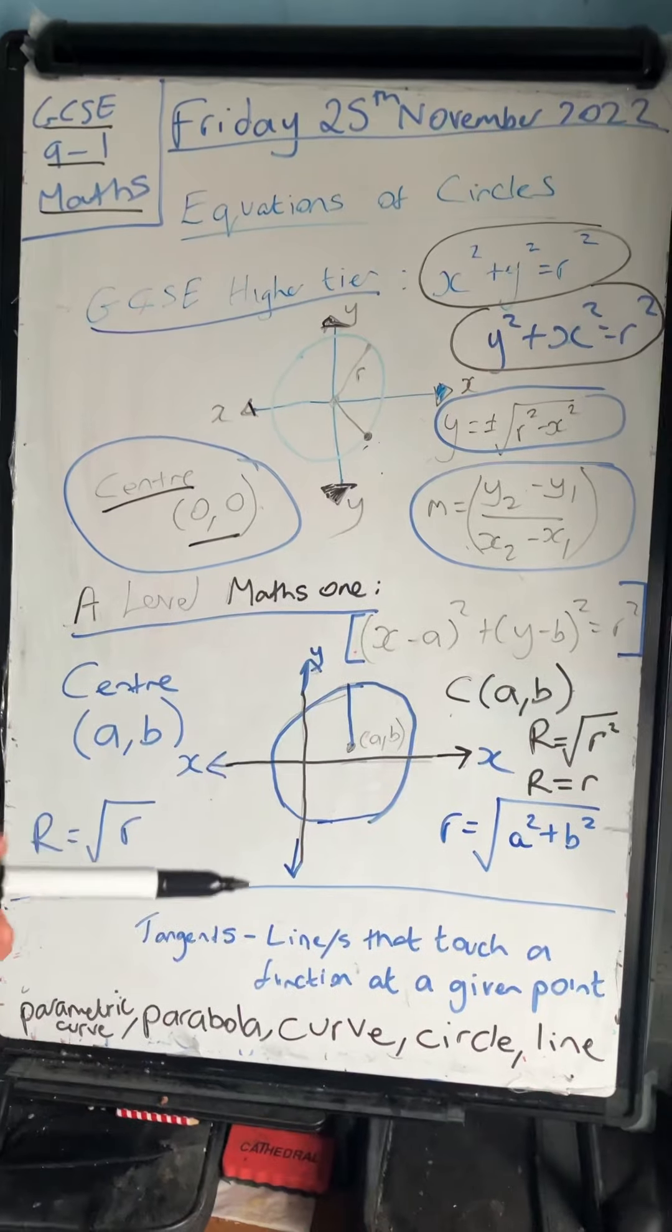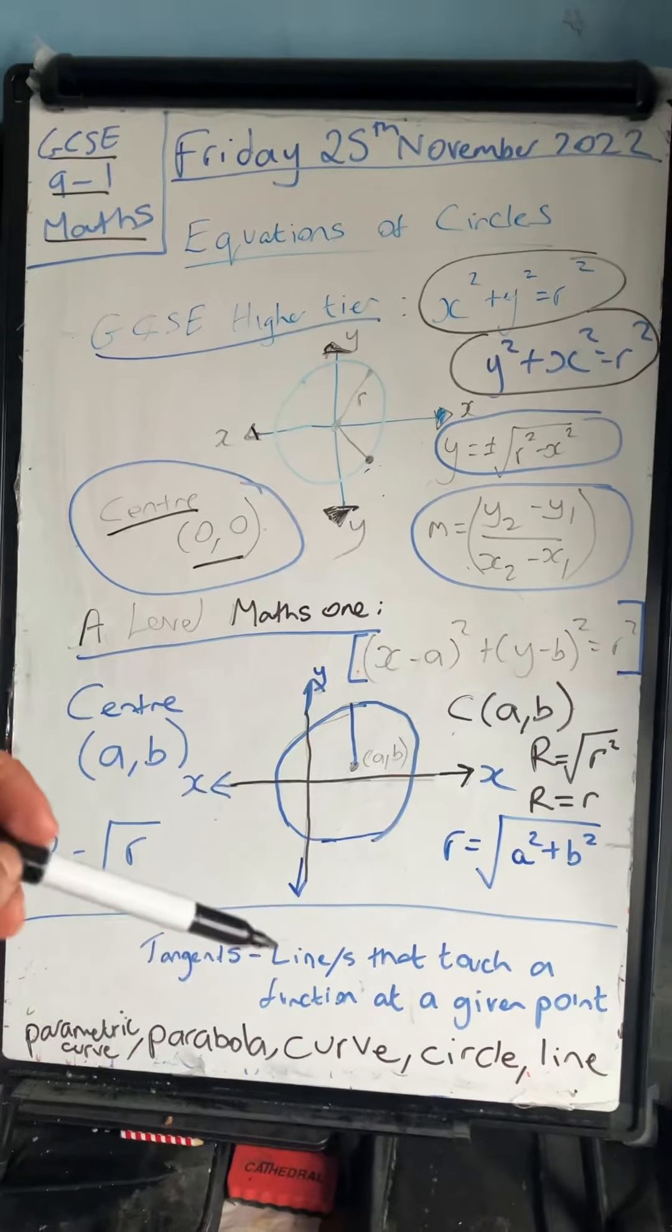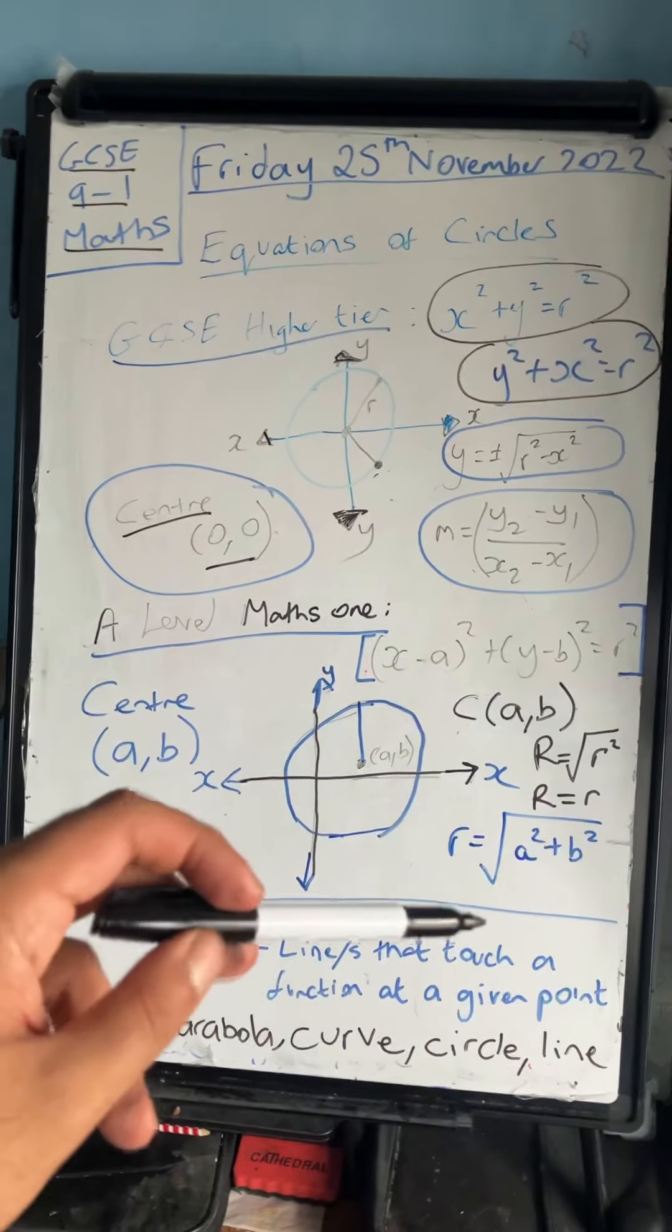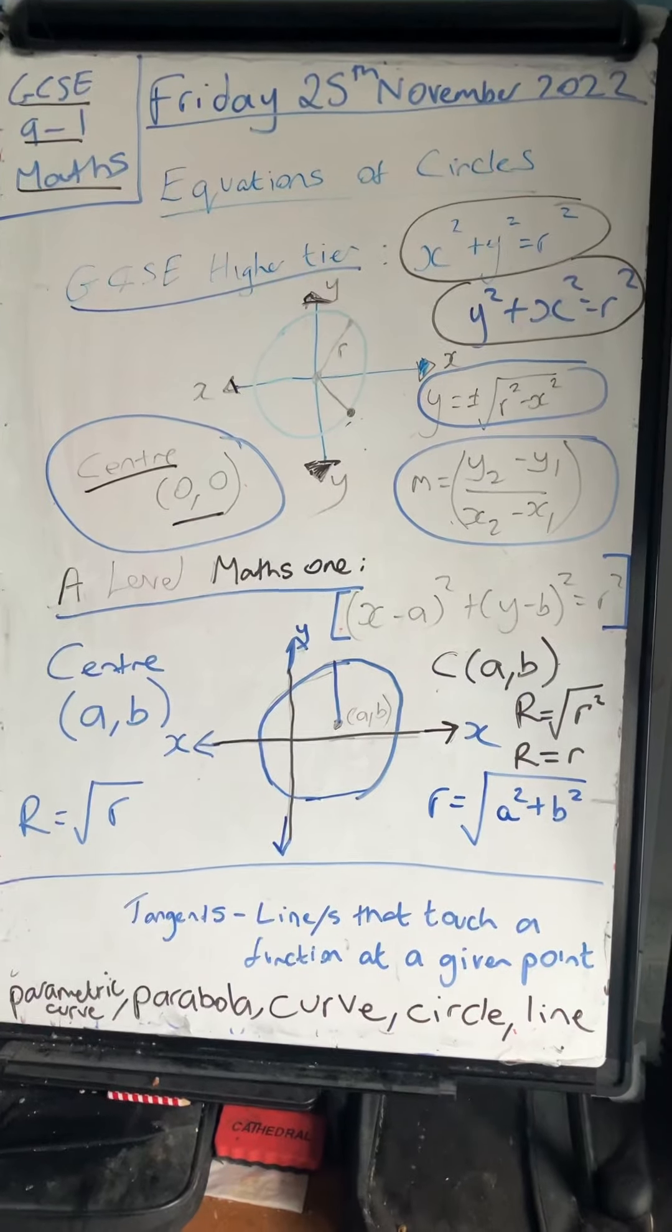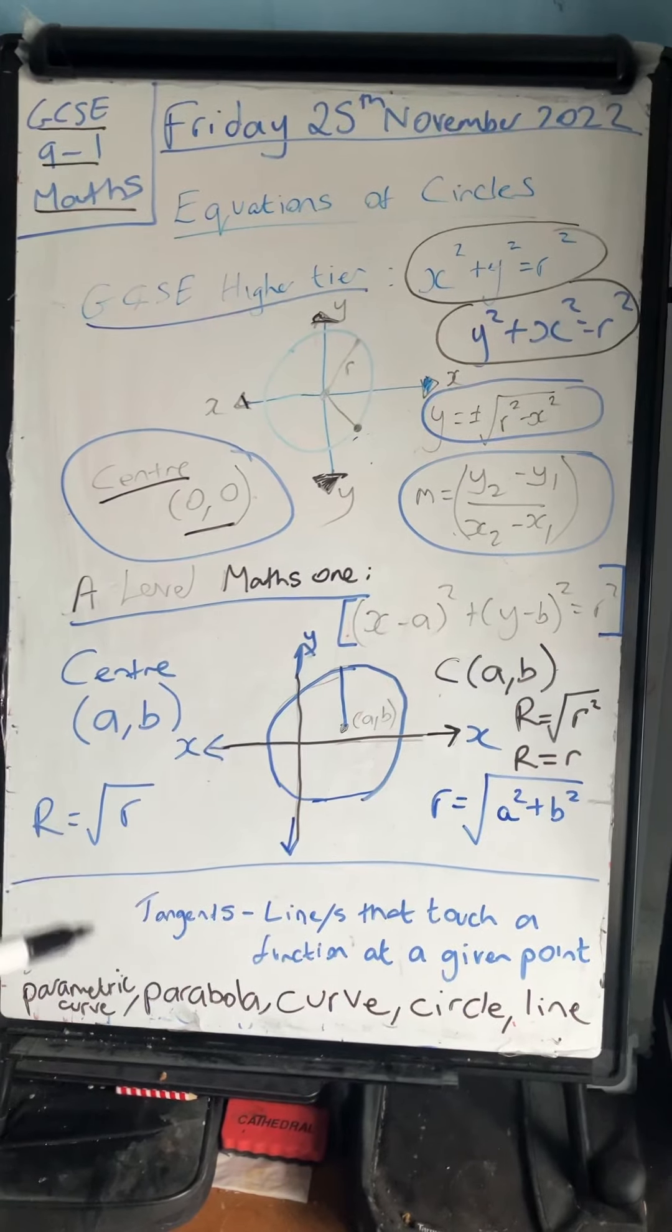I've put here: a tangent is just a line or lines that meet a function at a given point, so it touches it at a given point, and it can cross at the parametric equation, a parabola, a curve, a circle, or a line.